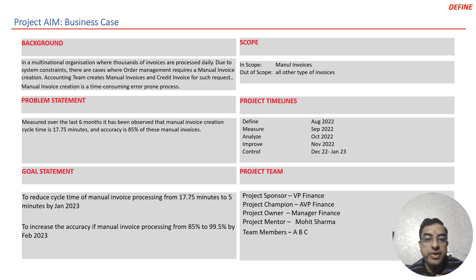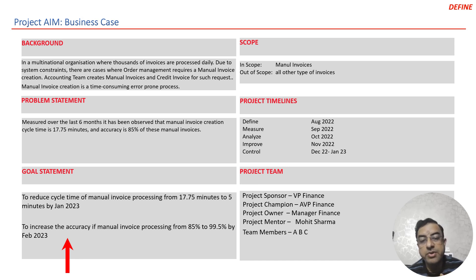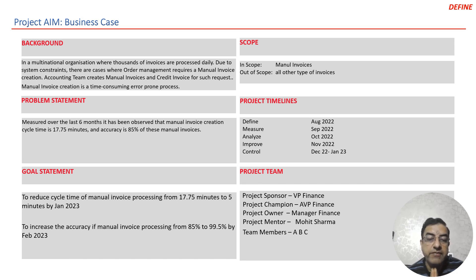In this video, we are going to learn there were some errors also which they were creating while processing those manual invoices, and the team wanted to reduce this error count. The goal that they took was to increase the accuracy of manual invoice processing from 85% to 99.5%, and they took the goal to reduce it by February 2023. The rest of the project charter has been explained earlier in my previous video.